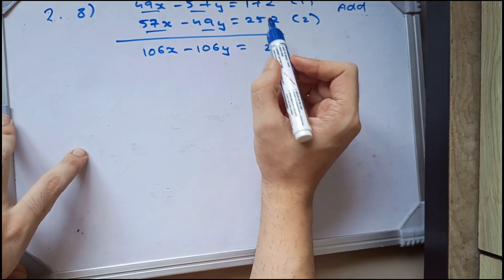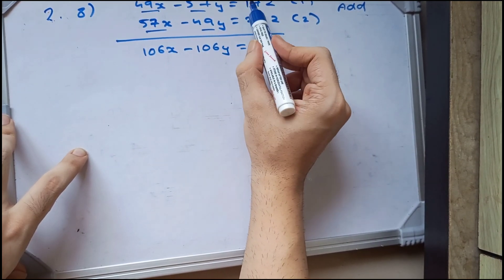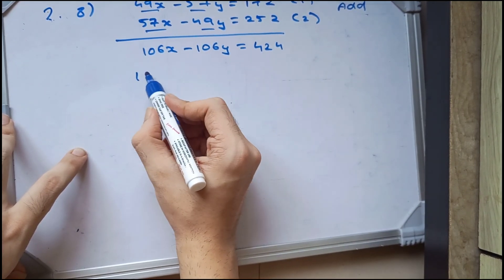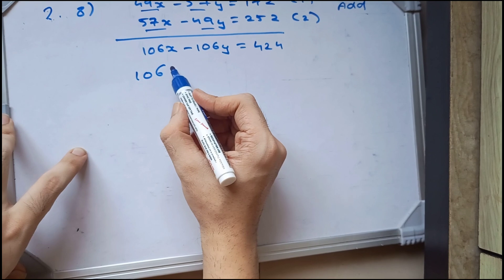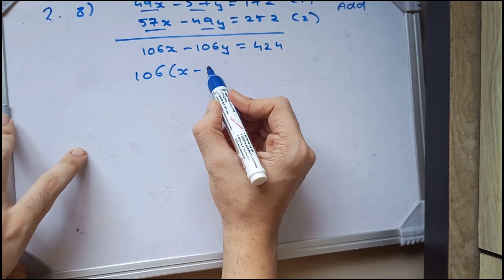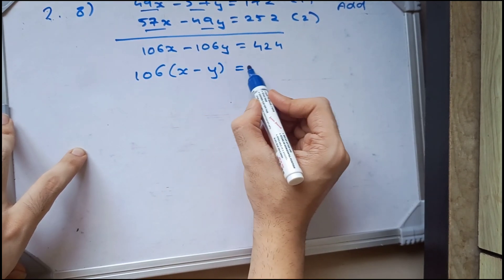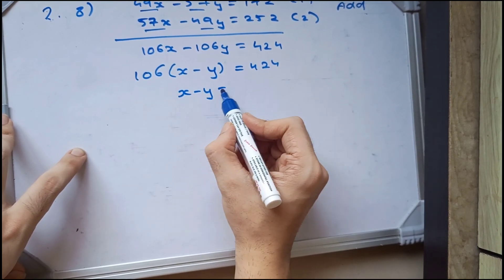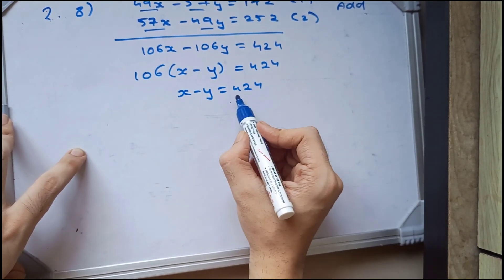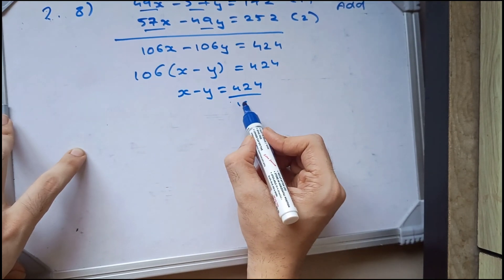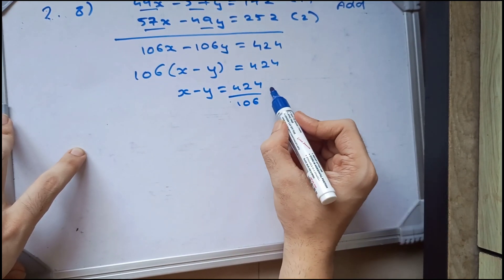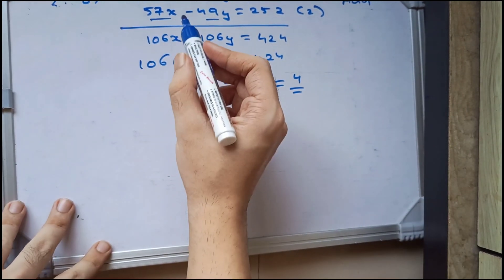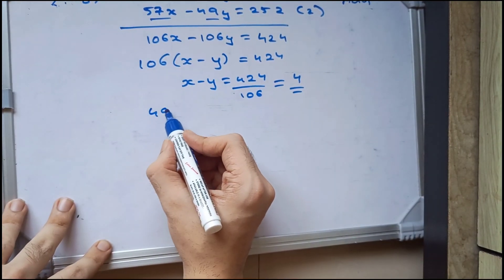We will get 1 carry and we get 424. Now we will take 106 common: 106 in the bracket, x minus y, which is equal to 424. So x minus y and 106: 106 fours are 424, so 4 is the answer. x minus y is equal to 4.